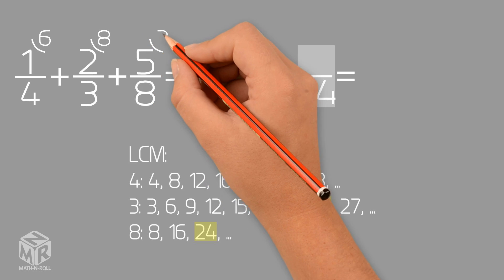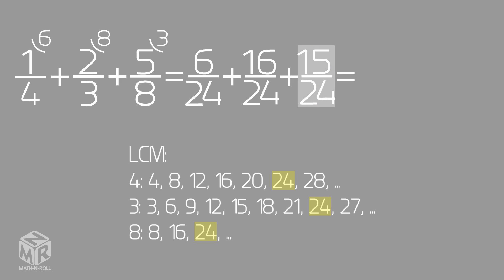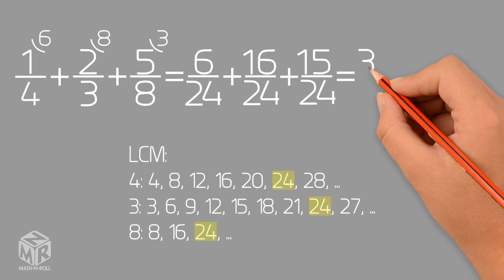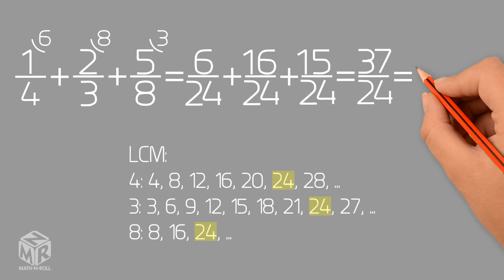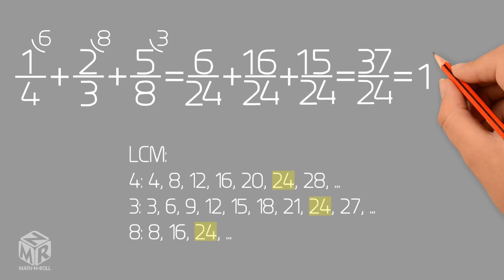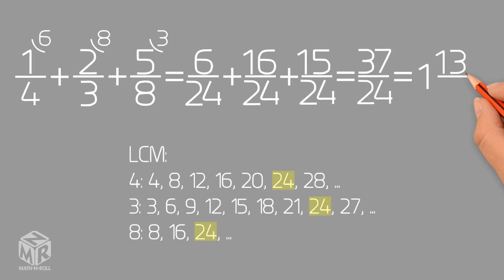Now we add all 3 fractions. 6 over 24 plus 16 over 24 plus 15 over 24 equals 37 over 24. We can rewrite this as 1 and 13 over 24.